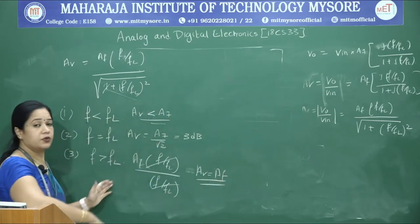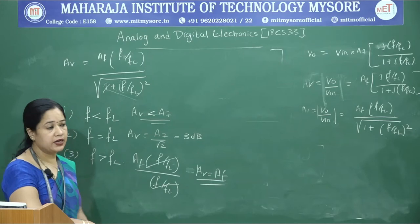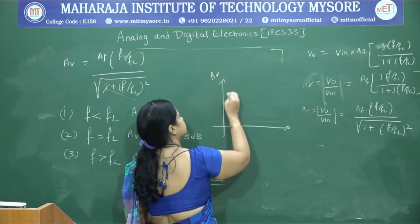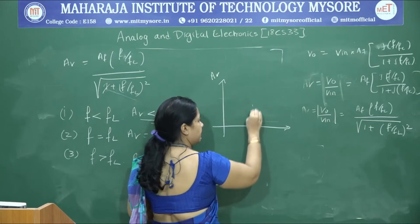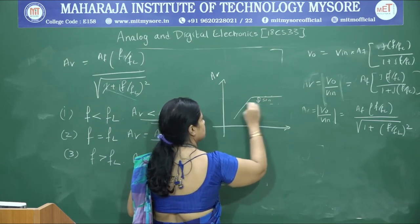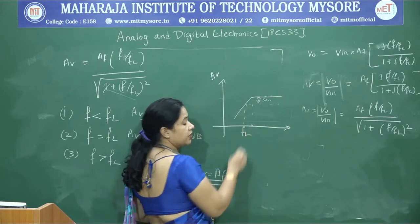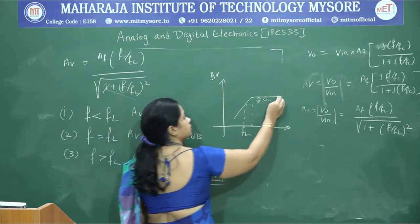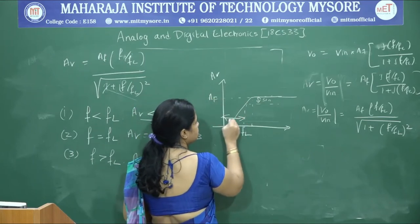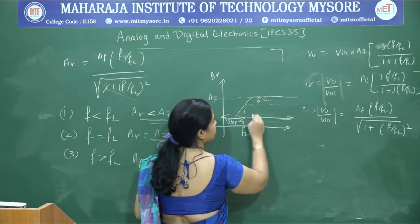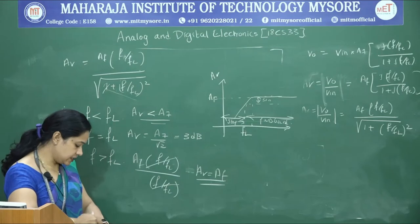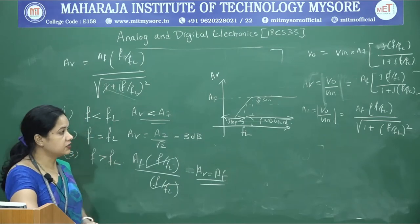Beyond the cutoff frequency, the filter has maximum pass band gain. Ideally the frequency response would be a step, but practically it rolls off. F_L is designated as the lowest frequency a high pass filter passes. Above F_L is the pass band with maximum pass band gain; below F_L is the stop band. This is how the frequency response of a first order high pass filter looks.